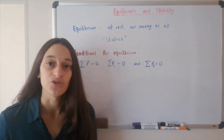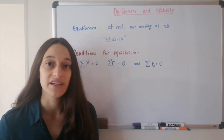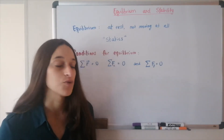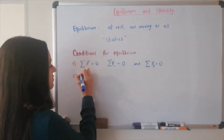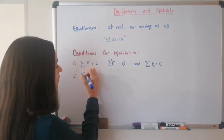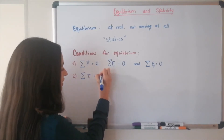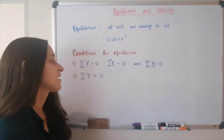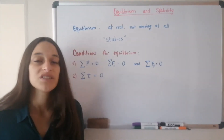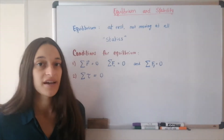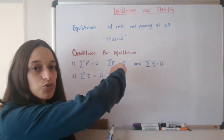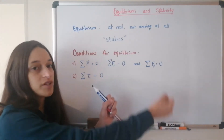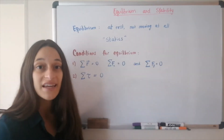The second condition is the condition for rotational equilibrium — that means an object is not rotating. That only happens if the sum of all the torques acting on an object is equal to zero. We write that as the sum of all torques (written as a cursive uppercase T) equals zero. There can be torques acting on the object, but all of the torques that try to rotate it clockwise have to equal all the torques that try to move it counterclockwise, so they cancel out.